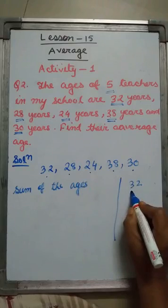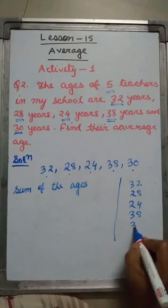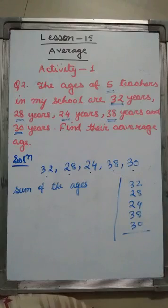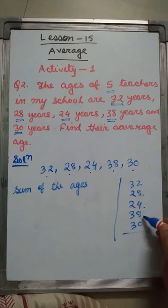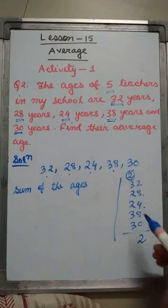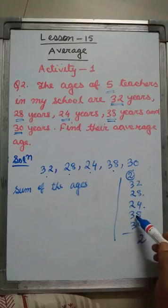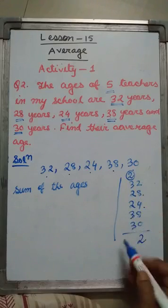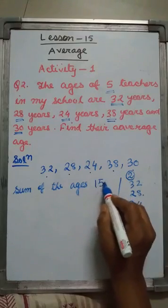32 plus 28 plus 24 plus 38 plus 30. If you add: 2 plus 8 is 10, plus 4 is 14, plus 8 is 22. 2 is carried. 2 plus 3 is 5, plus 2 is 7, plus 2 is 9, plus 3 is 12, plus 3 is 15. So the sum of the ages is 152.